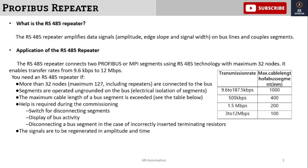The maximum cable length of a bus is extended using the repeater. When the cable length is about to reach 80 to 100 meters, we generally use a repeater — otherwise the signal voltage of the Profibus network will drop and modules beyond 80 to 100 meters will disconnect or not communicate properly with the main system or controller. We use 3 to 12 Mbps for 100 meters, and 1.5 Mbps for 200 meters.